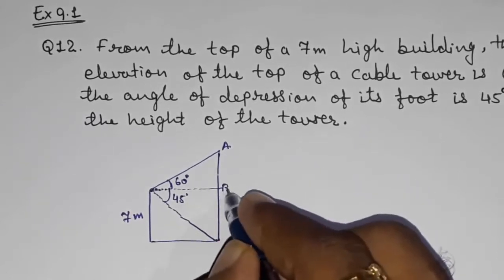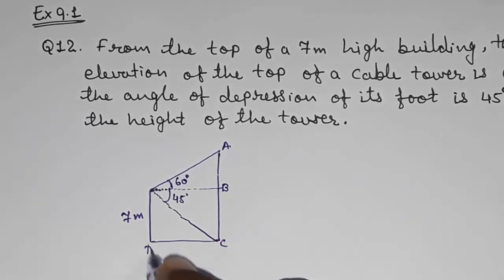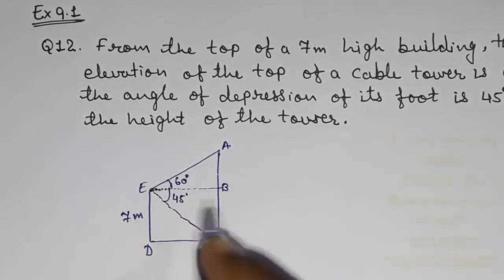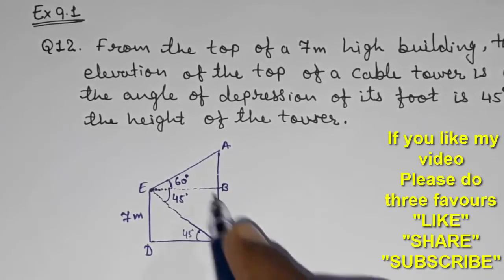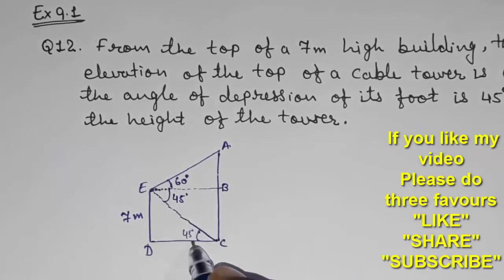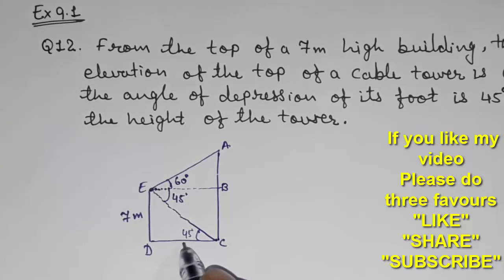I am giving name to this different points: A, B, C, D, E. Now this is 45 degrees, so this will be also 45 degrees because angle of depression is equal to angle of elevation, alternate interior angles. But we are not going to use this.